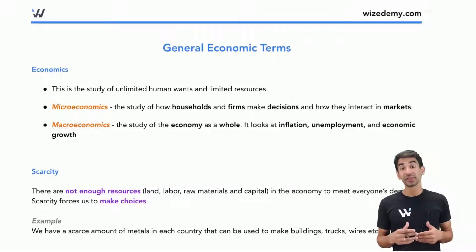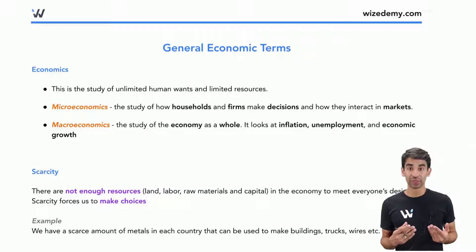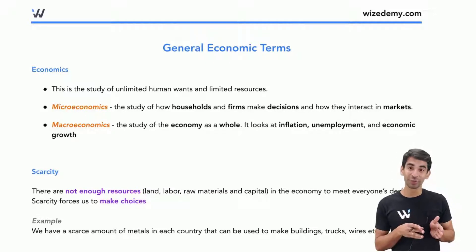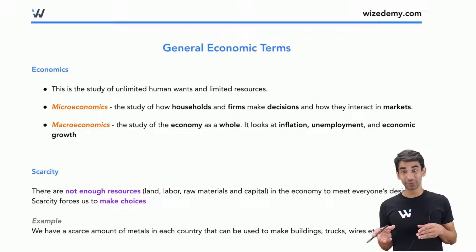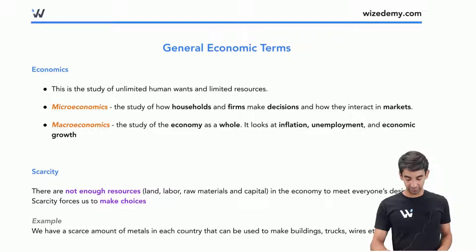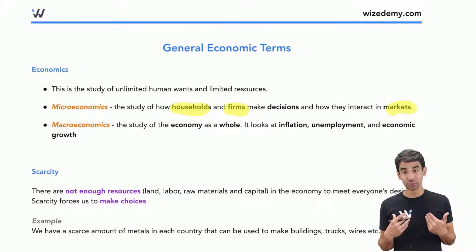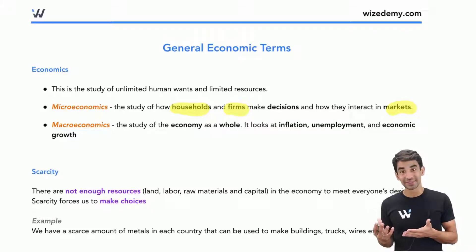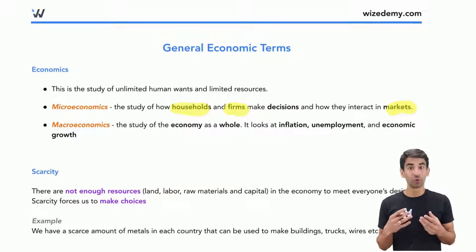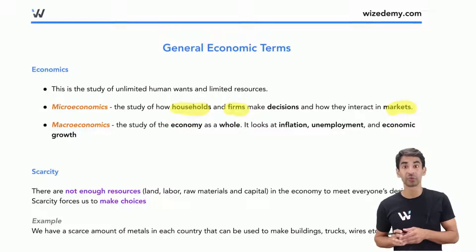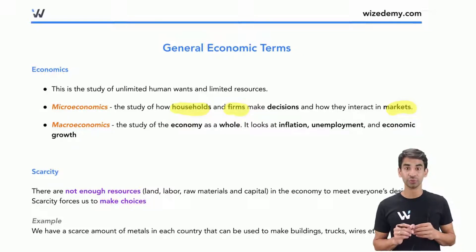General economic terms — looking at some key definitions we're going to see in later chapters. The first is the key difference between microeconomics and macroeconomics. In this course, microeconomics looks at individual households and firms and the decisions we make in markets. It's looking at us, the households, consumers, and the firms — the businesses — and how we interact, normally in just one specific market, like the market for books or shoes.